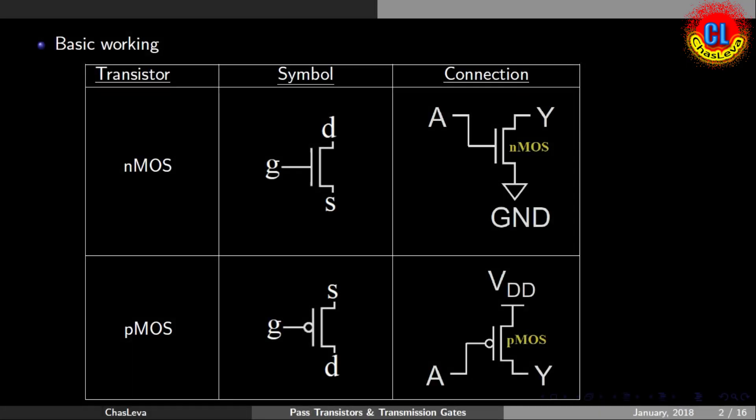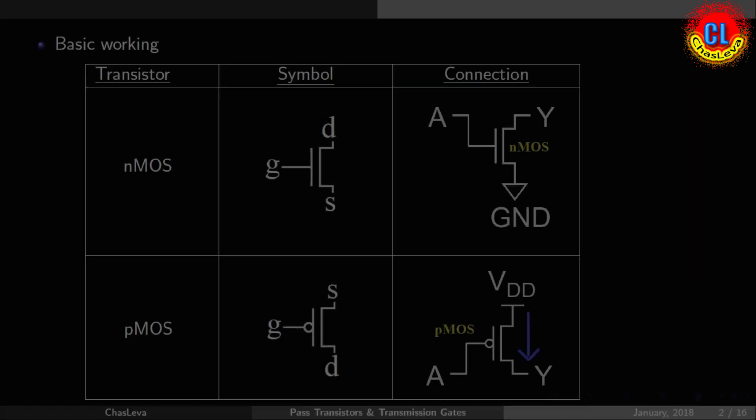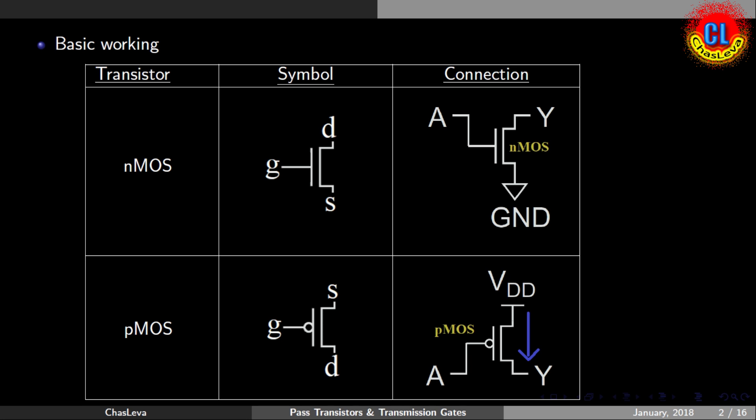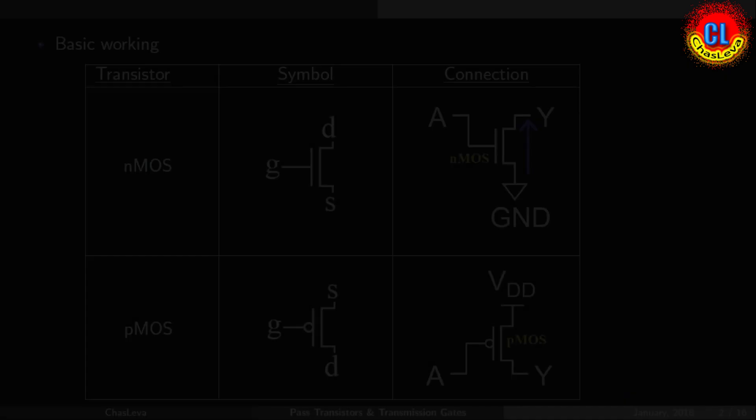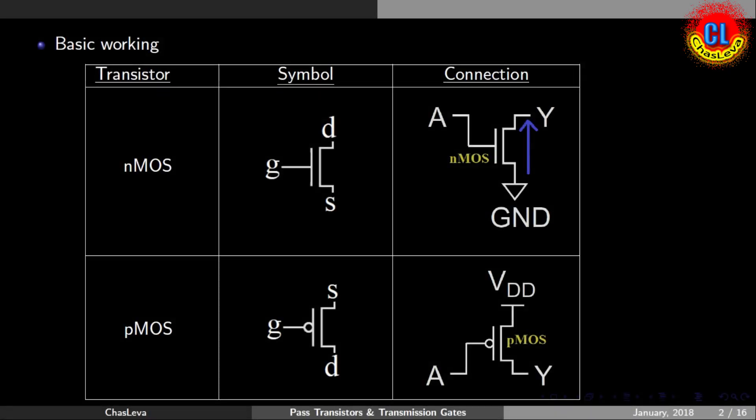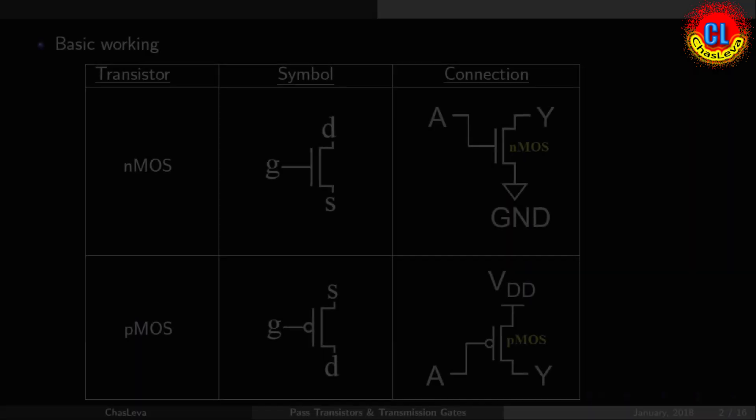If we see the working of PMOS, when the gate voltage is enough to turn on, the transistor will pass the VDD connected at source to the drain. Same as like this, in NMOS transistor, when the gate voltage is enough to turn on, the transistor VSS connected to source will get at drain terminal.